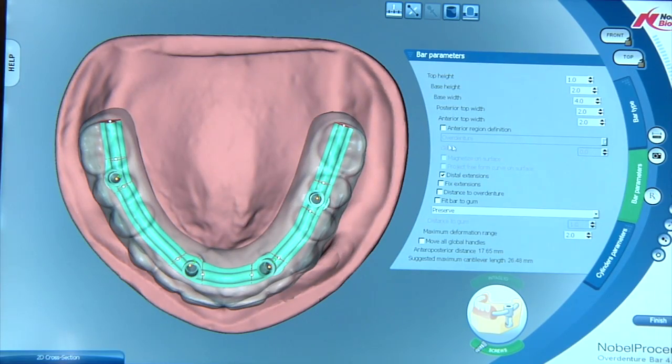This is the first new feature. It's called the anterior region definition. By clicking on this, what it's going to allow us to do is place different types of support mechanism along the top surface of this bar.